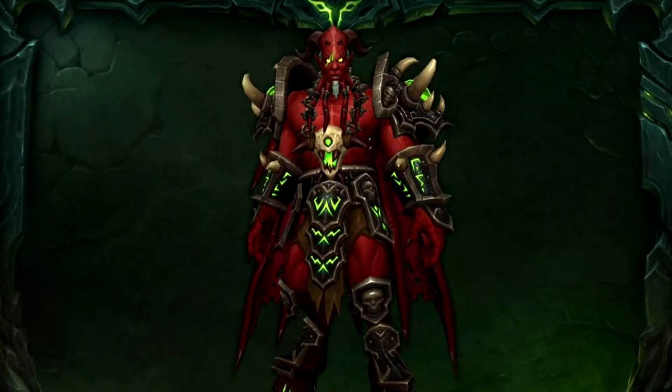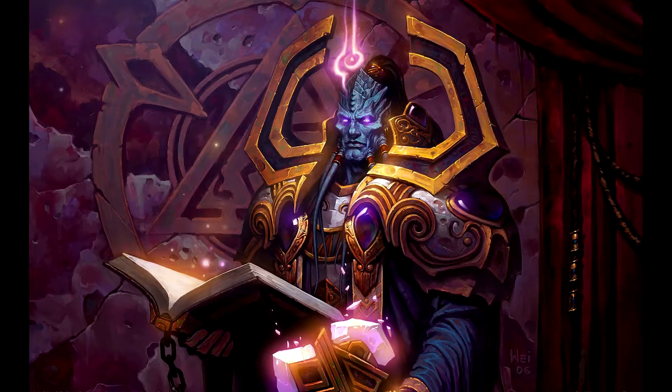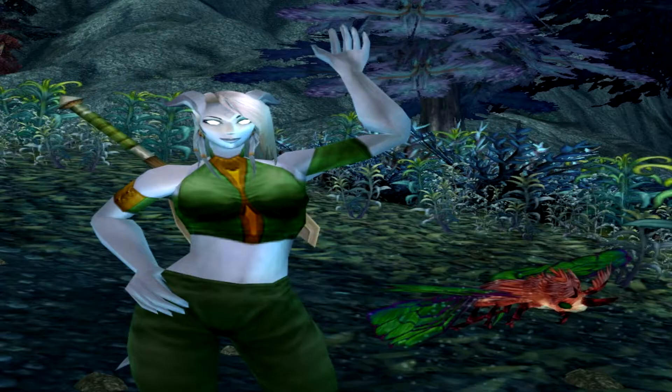So then Kil'jaeden decided to corrupt some people named orcs. Oh, and also the Draenei are bad people. You should kill them. OK, so then they did. Well, Velen decided to go hide out in a mushroom house with the remainder of his people.